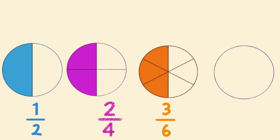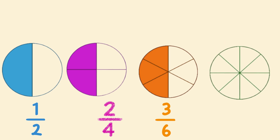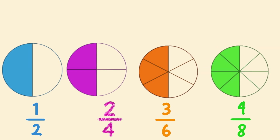Let's take the same circle and cut it into eight equal parts this time. The denominator will now be eight since there are eight equal parts. How many parts do we need to shade in this new circle to make it equivalent to the previous three fractions? We will need to shade four parts. Four-eighths is an equivalent fraction to all the previous three fractions we've looked at, since they all represent the same amount shaded in the circle.